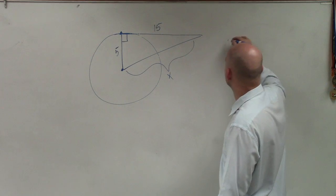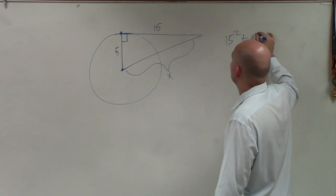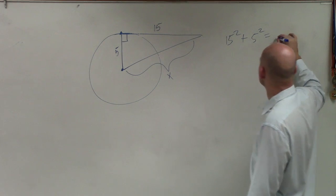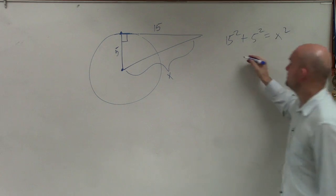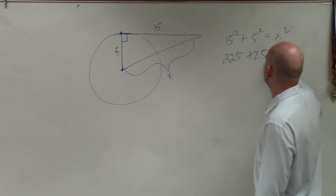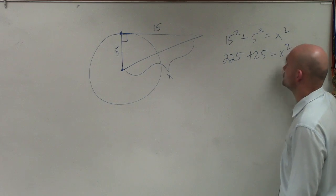So I can say 15 squared plus 5 squared equals x squared. 15 squared is 225 plus 25 equals x squared.